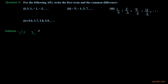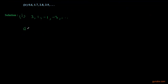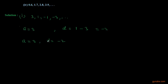First, the AP is 3, 1, minus 1, and minus 3, and the next terms. The first term is clearly 3. We can find the common difference by subtracting the first term from the second one. The second term is 1 and the first term is 3, so we get minus 2. Therefore, the first term is 3 and the common difference is minus 2.